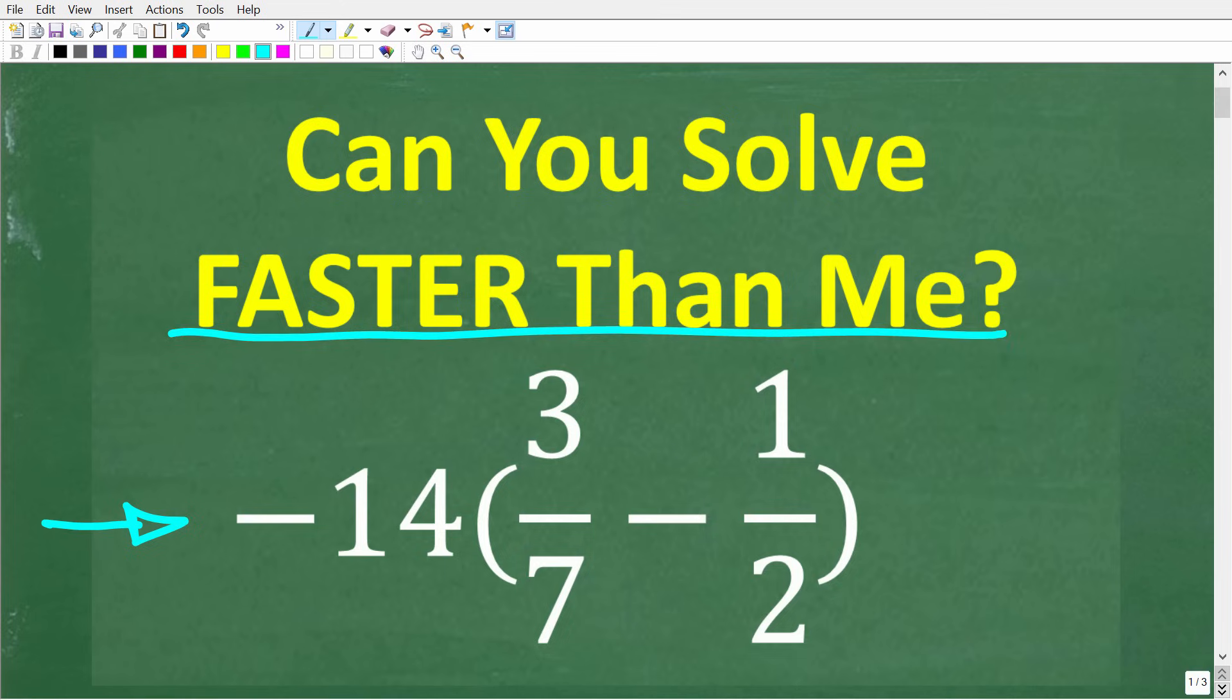We have negative 14 times 3 sevenths minus 1 half. Now, feel free to use a calculator, but if you think you have the answer, put that into the comment section and maybe tell me how you solved it and about how much time it took for you to get the solution. I think I can solve this problem in about 10 seconds, and I'm going to do this in real time. But before I do,